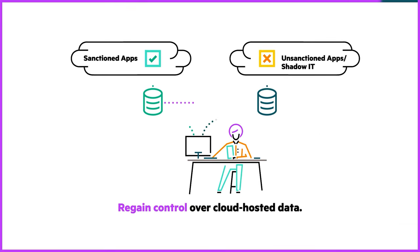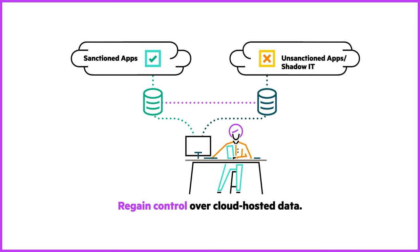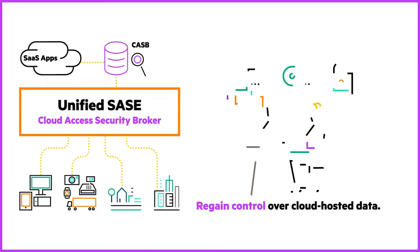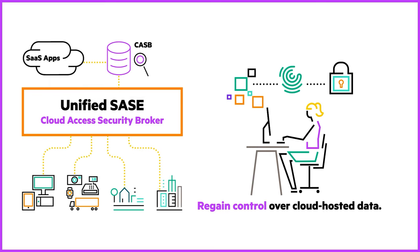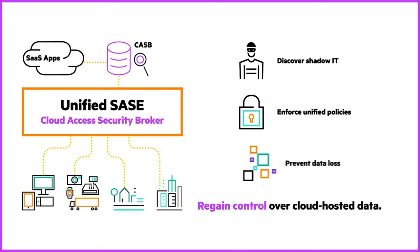As more organizations adopt cloud services, protecting cloud-based data is key. More sensitive data travels over unsecured links hosted outside the perimeter in sanctioned or unsanctioned cloud services. Cloud Access Security Broker, or CASB, lets organizations detect and prevent potential data breaches by monitoring and blocking unsafe data movements. It helps organizations discover shadow IT, enforce unified policies across platforms, and prevent data loss through controlled file uploads and downloads.